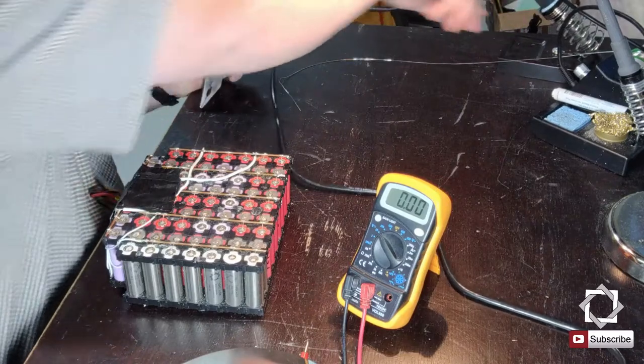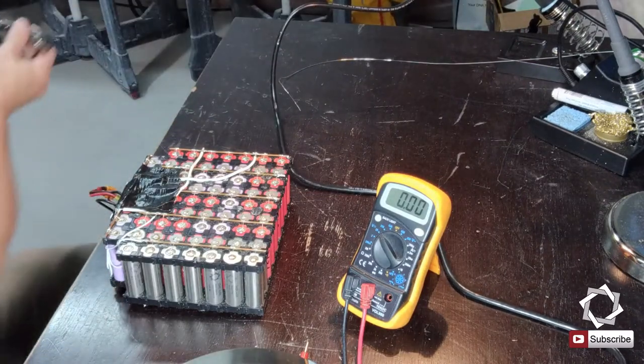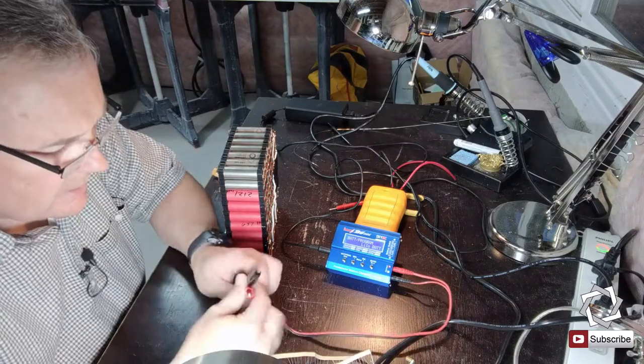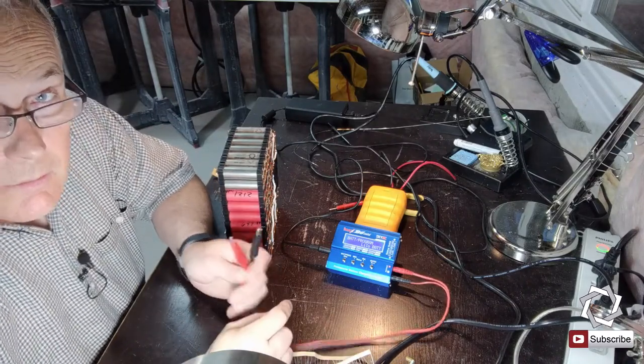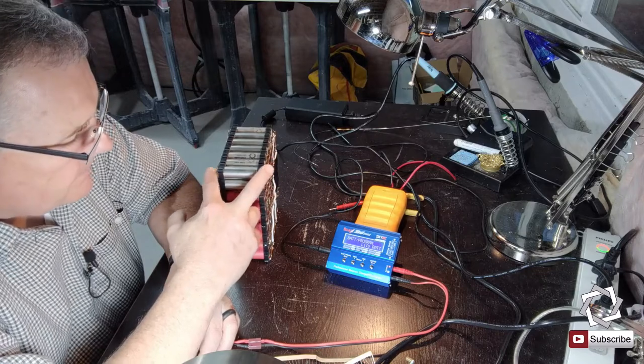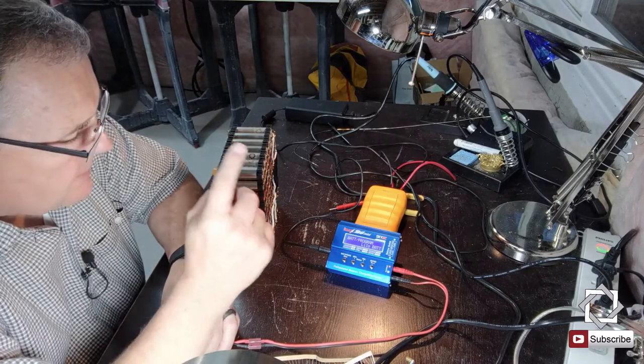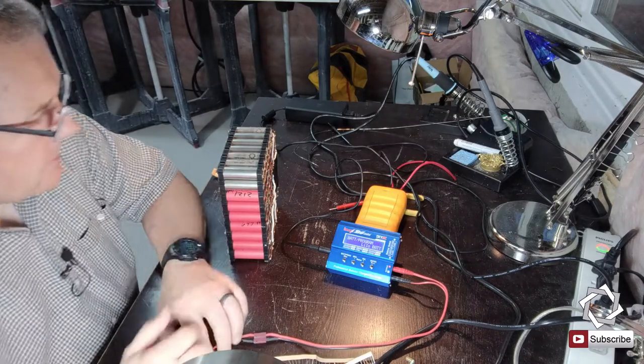All right, so cells are all back together again. Let me grab my iMax. Okay, so what we're going to do here is I'm just going to use these alligator clips and charge these two cell banks up independently. I'll probably do them one at a time. I could do them both at the same time, but I'm just going to do them one at a time.